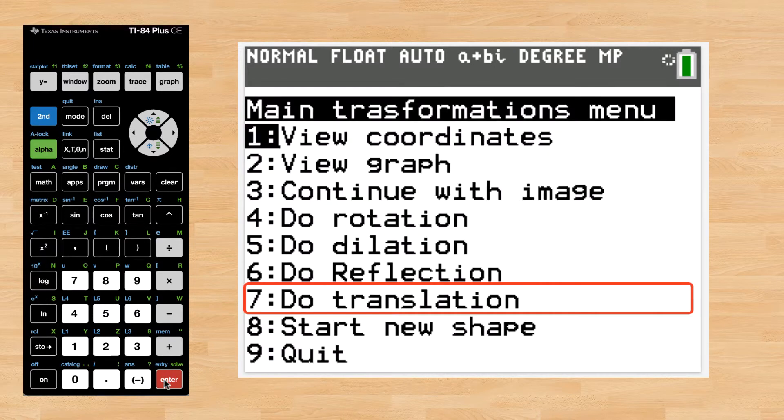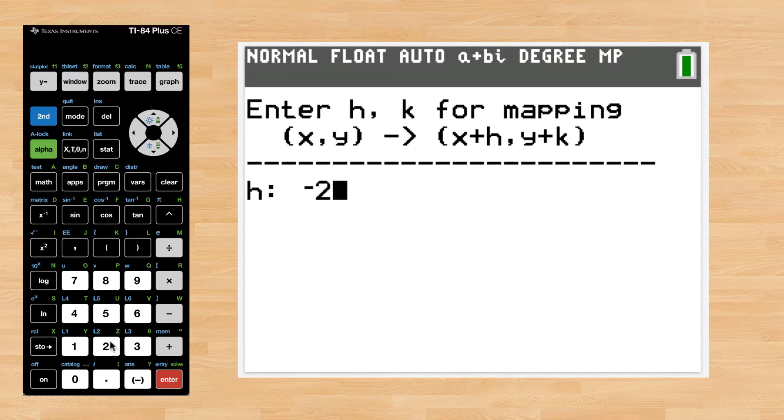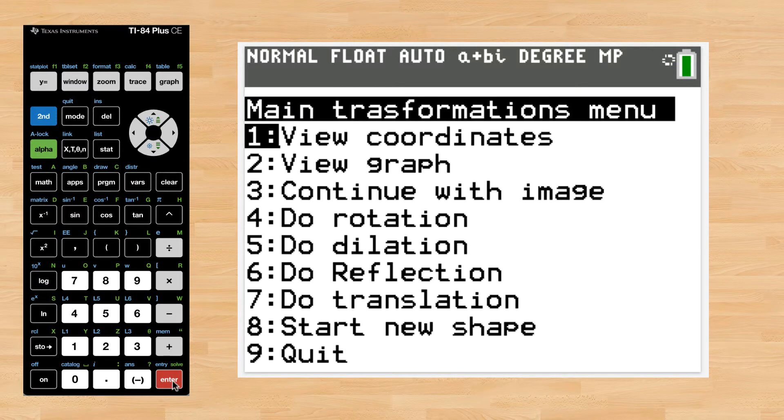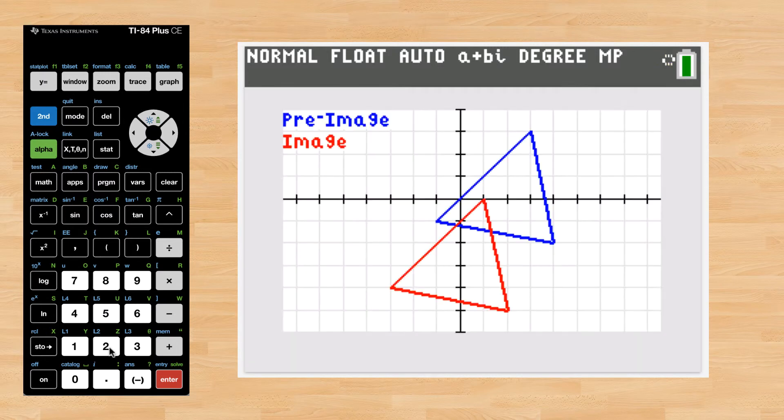To translate it two units to the left and three units down, our h value will be -2 and the k value will be -3. When you view the result, the red triangle image has indeed moved 2 units to the left and 3 units down.